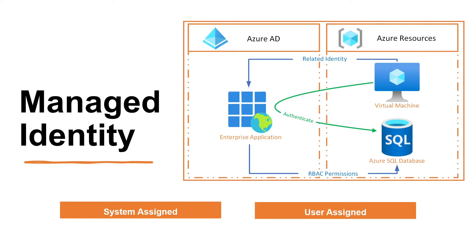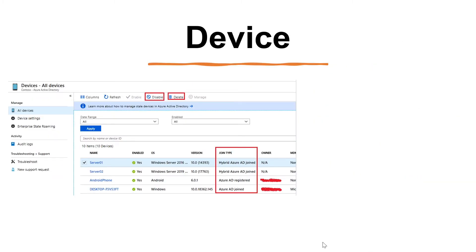The second type of managed identities are user assigned. You may also create a managed identity as a standalone Azure resource. A user assigned managed identity is assigned to one or more instances of an Azure service. You can create a user assigned managed identity and assign it to one or more instances of an Azure service. In the case of user assigned managed identities, the identity is managed separately from the resources that use it.